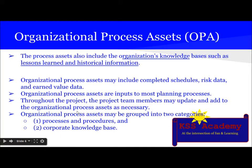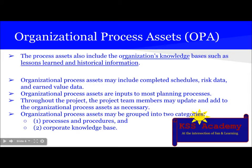Organizational Process Assets may be grouped into two categories: Processes and Procedures, and Corporate Knowledge Base. Under Processes and Procedures, we include processes, policies, safety, health, ethics, financial controls, change control, risk and time management, templates, guidelines, closure procedures, and communication. Under Corporate Knowledge Base, we include databases such as measurements, defects, and financials, as well as historical information, lessons learned, and project files.